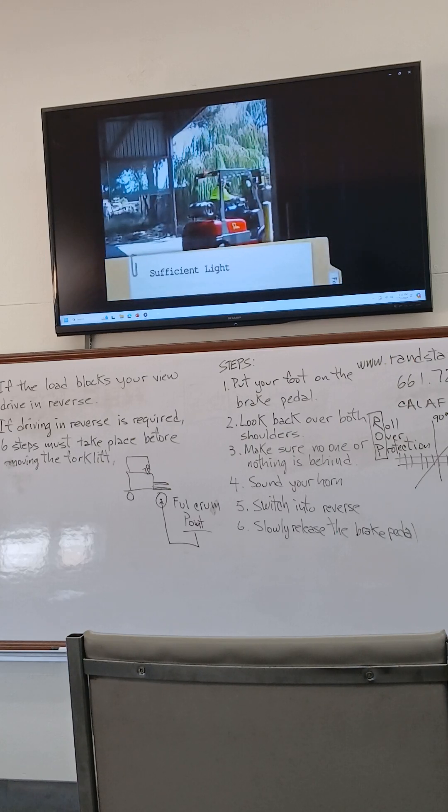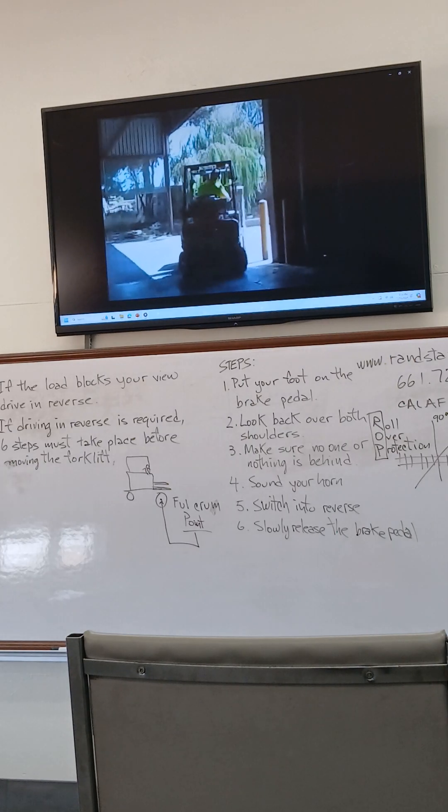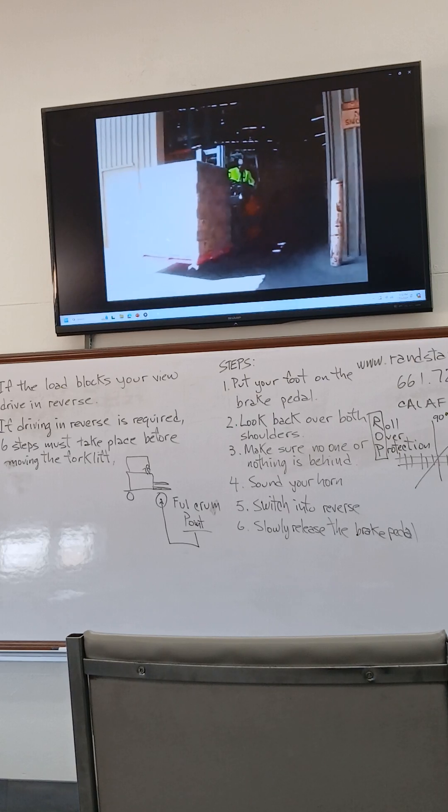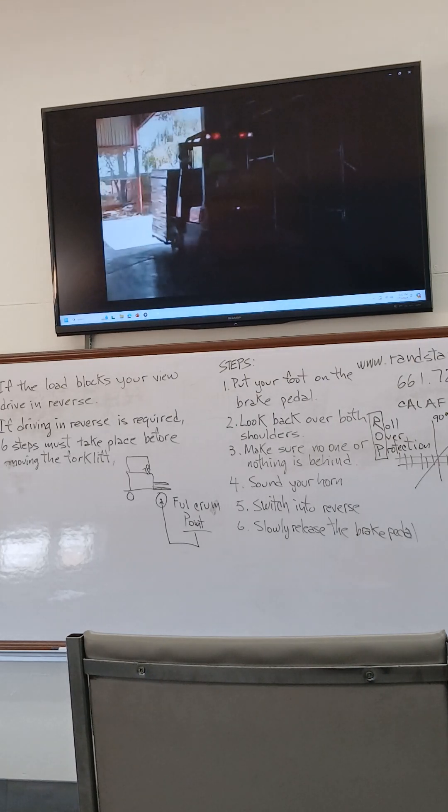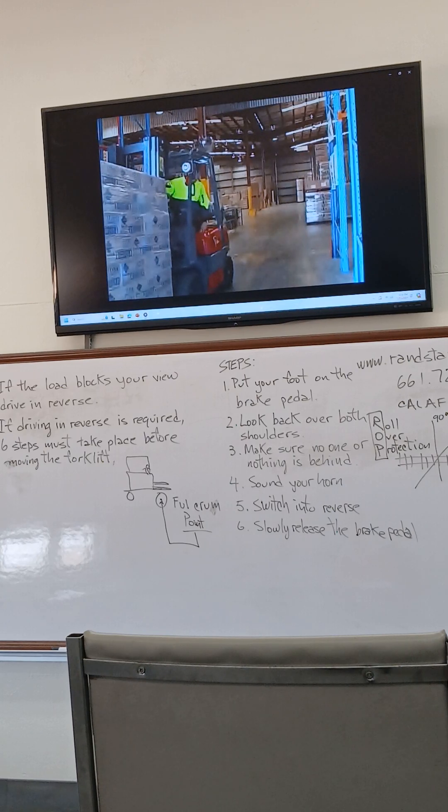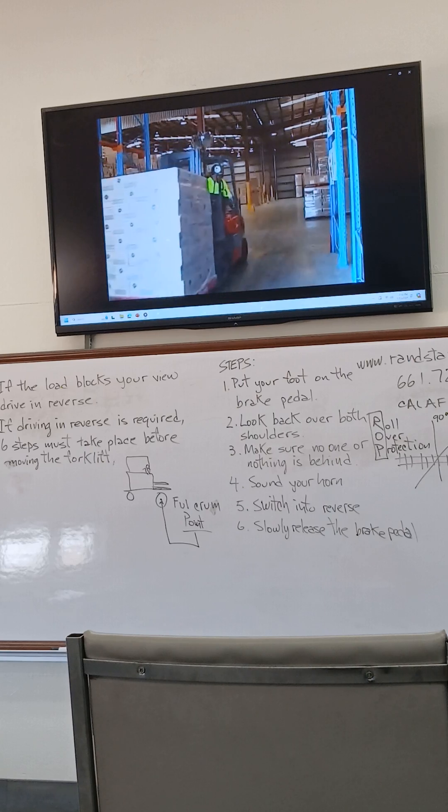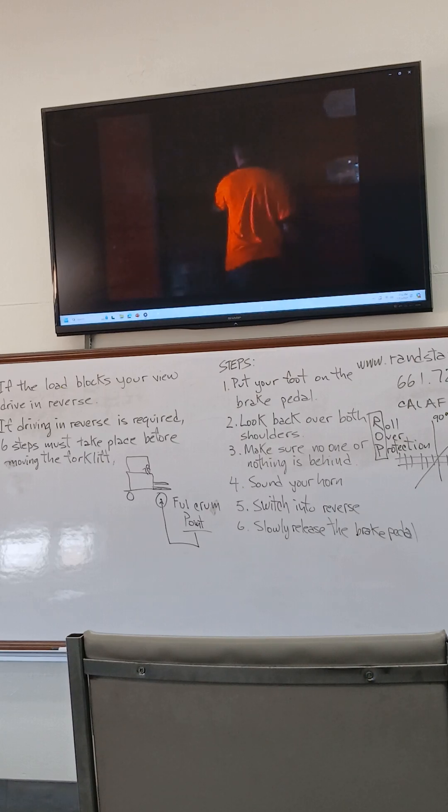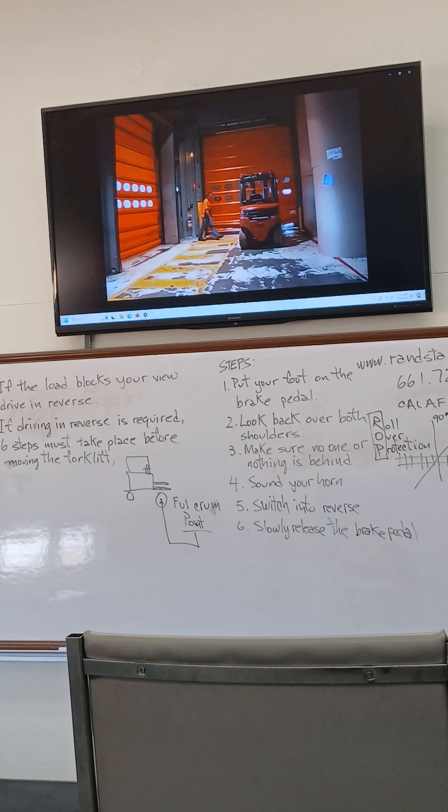Visibility can be affected by insufficient light and also by very bright light. When driving into a darker area or into bright sunshine, stop and let your eyes adjust to the light. Always make sure you have sufficient light to carry out a task safely.